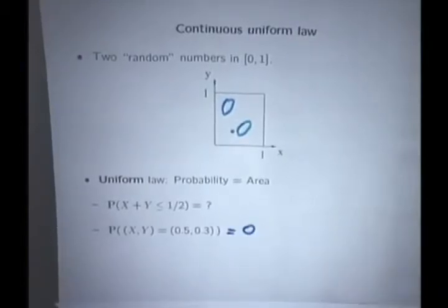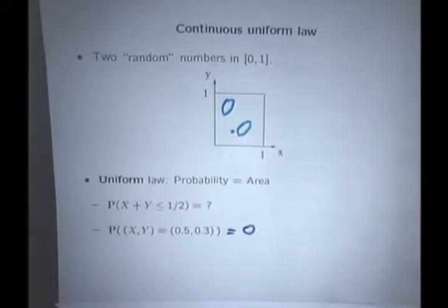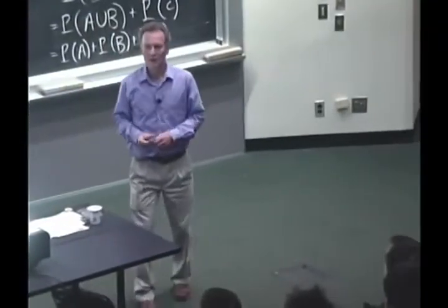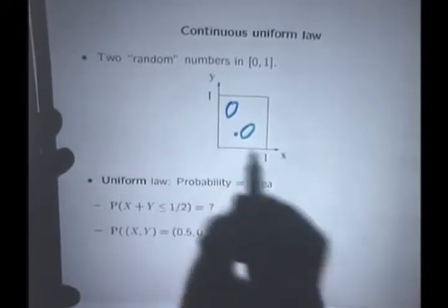How about the probability that the sum of the coordinates of the point that we got is less than or equal to one-half? How do you deal with it? Well, you look at the picture again at your sample space and try to describe the event that you're talking about.